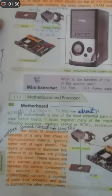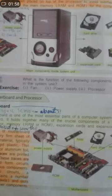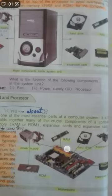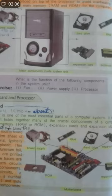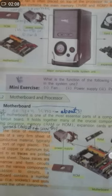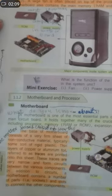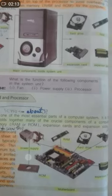A motherboard is one of the most essential parts of the computer system. It is the main circuit board — it holds together many of the crucial components of a computer, including the processor, memory, RAM, ROM, expansion cards, expansion slots, etc. These components shown in the pictures here are fixed on the motherboard.